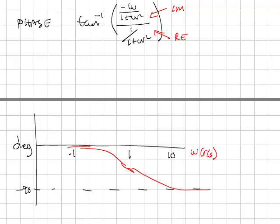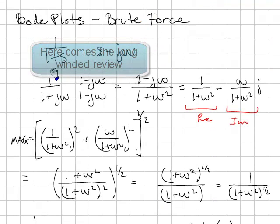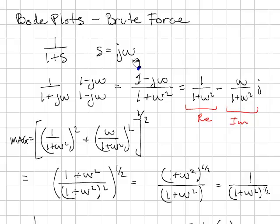This gives us the brute force method for drawing the Bode plots. A couple key points to remember. You start with the transfer function, make the substitution s is equal to j omega. Simplify this transfer function until you can divide it into real and imaginary parts.